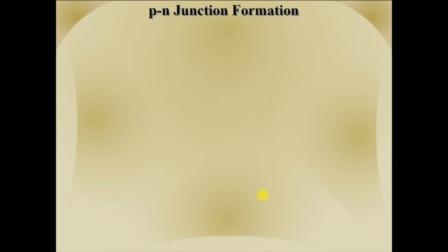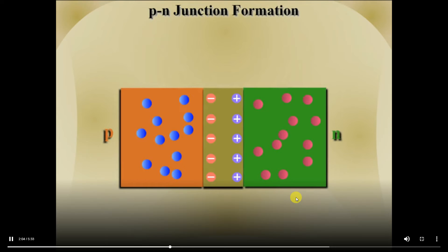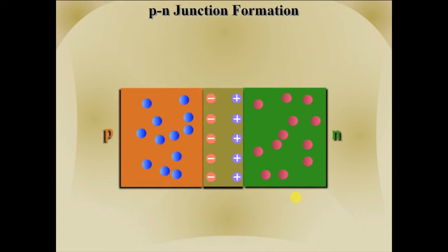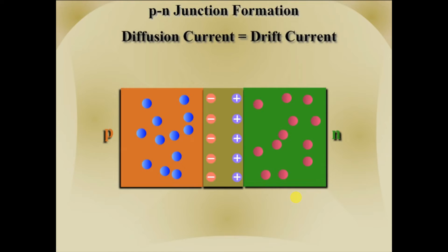Initially diffusion current is large and drift current is small. As more and more immobile ions are created in the depletion region, diffusion current decreases and drift current increases. Finally a stage is reached when diffusion current becomes equal to the drift current and charge carriers stop crossing the junction. This stage is called the equilibrium stage.